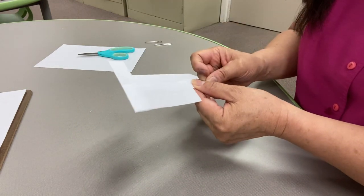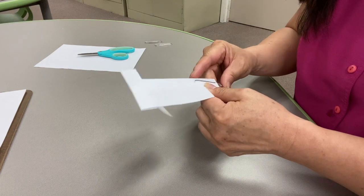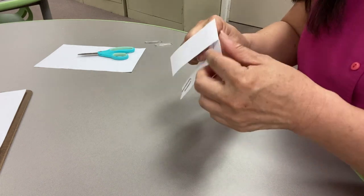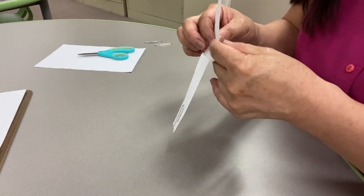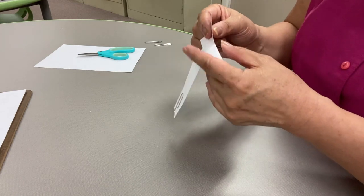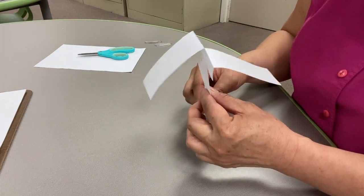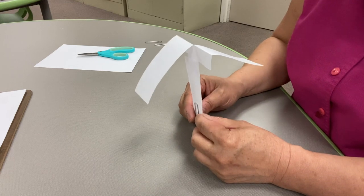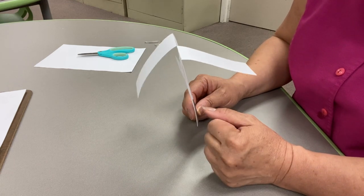And add our paper clip to the base. Now this time, the variable is a variable is anything that we can change that might affect the outcome or how the twirlybird flies.